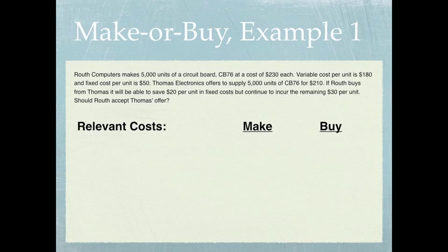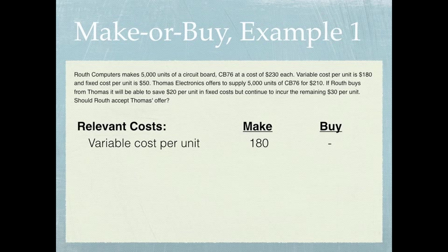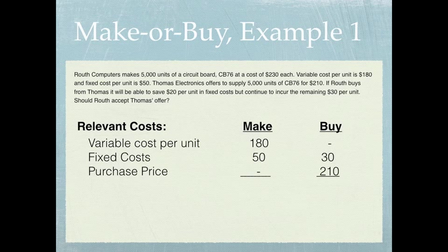We're only considering relevant information. The first relevant cost is variable cost per unit — if we decide to make the product, it will cost us $180; if we buy it, we'll have no variable cost per unit. Another relevant cost is fixed cost: $50 per unit to make, versus $30 per unit if we buy. The third relevant cost is the purchase price — zero if we make it, or $210 if we buy it.